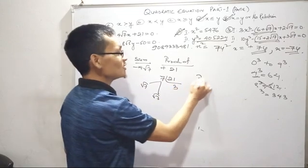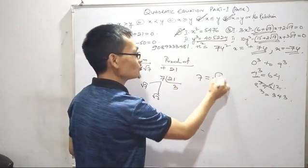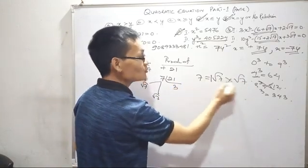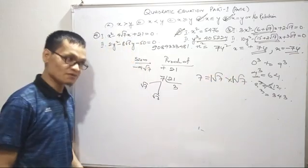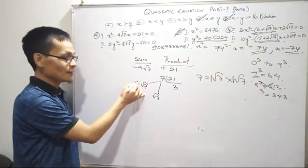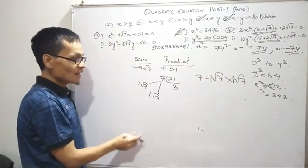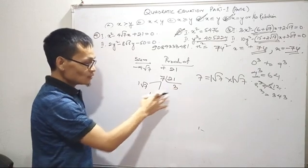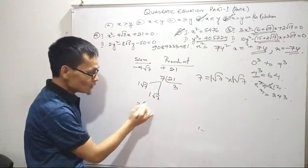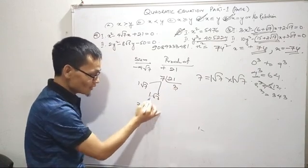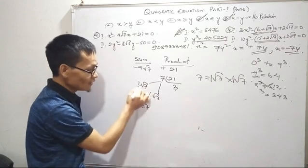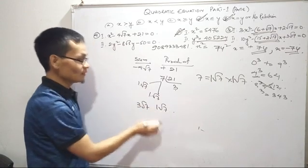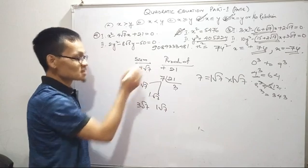Root over of seven multiplied by 7 — the same as root over of 7 into root over of 7, and root over of 7 into 1. Root over of 7: let 3 — 3 into 1 is 3, 3 into 1 is 3. Root over of 7, 1 root over of 7. Minus 4 root over of 7.